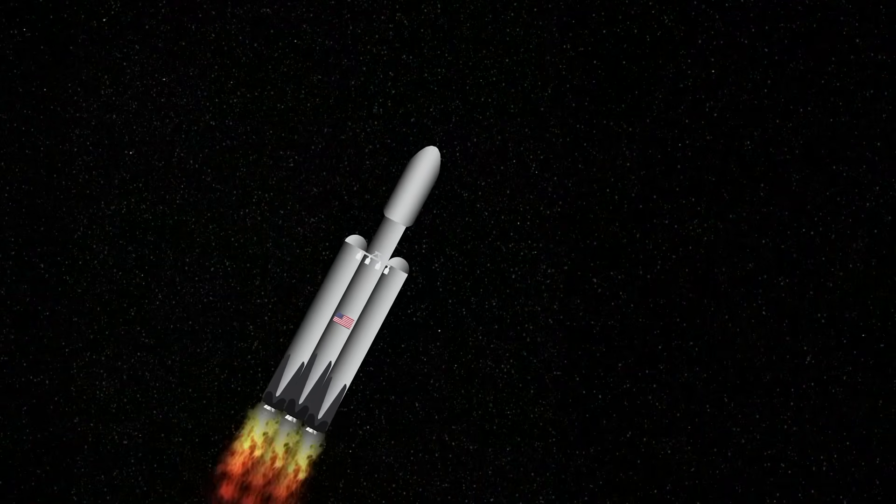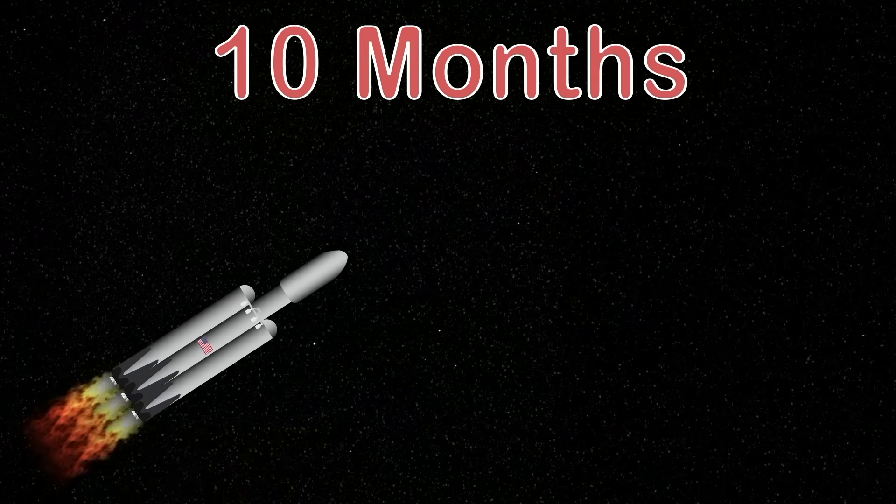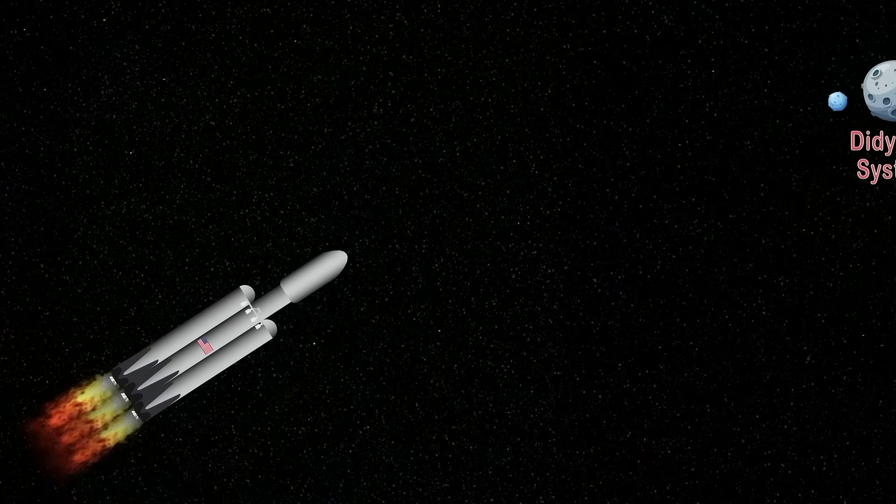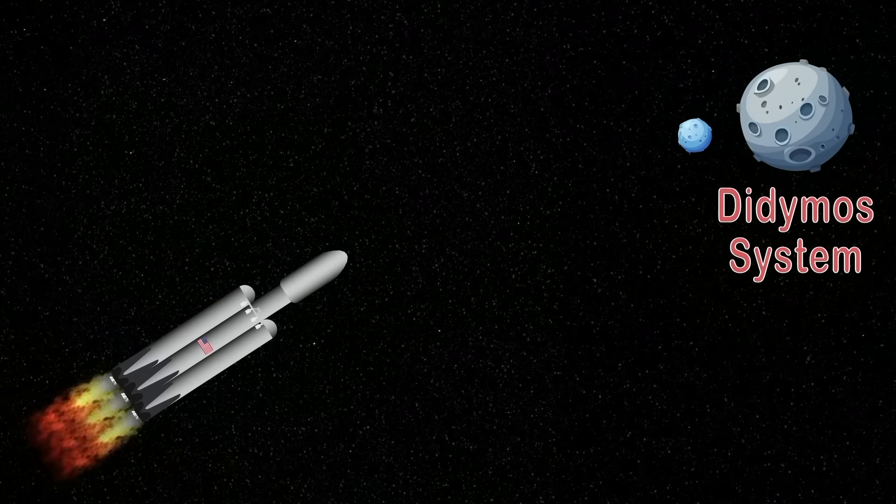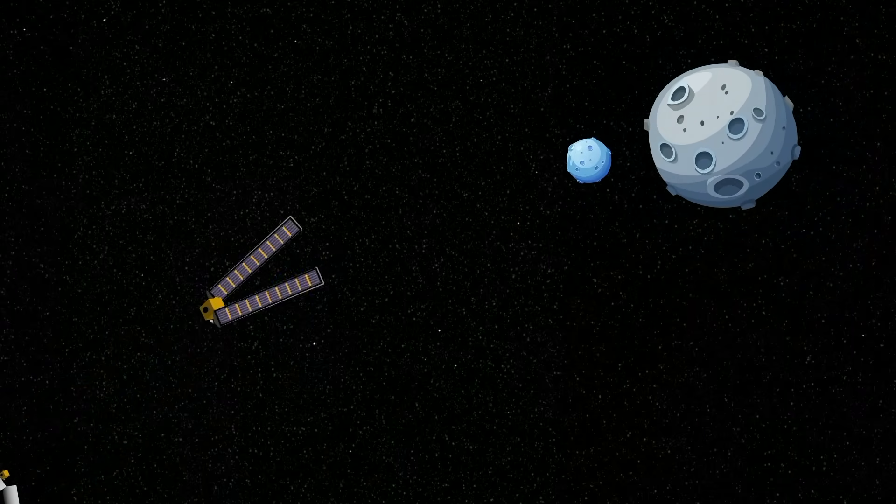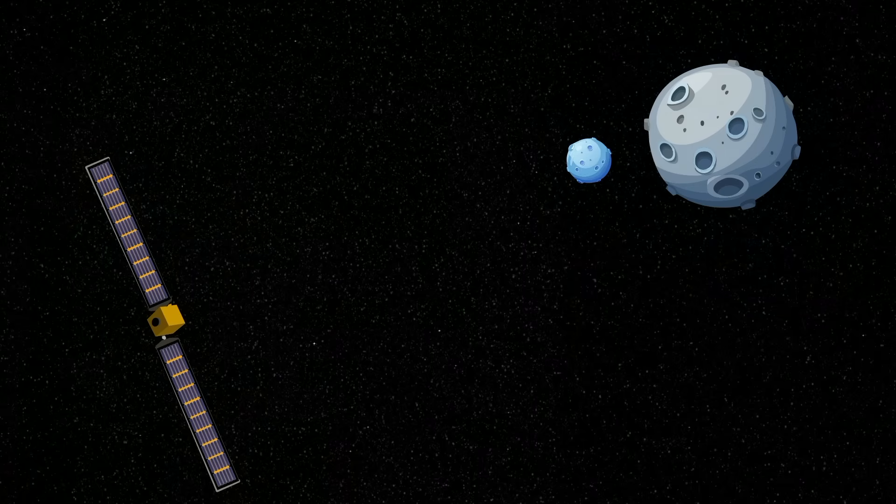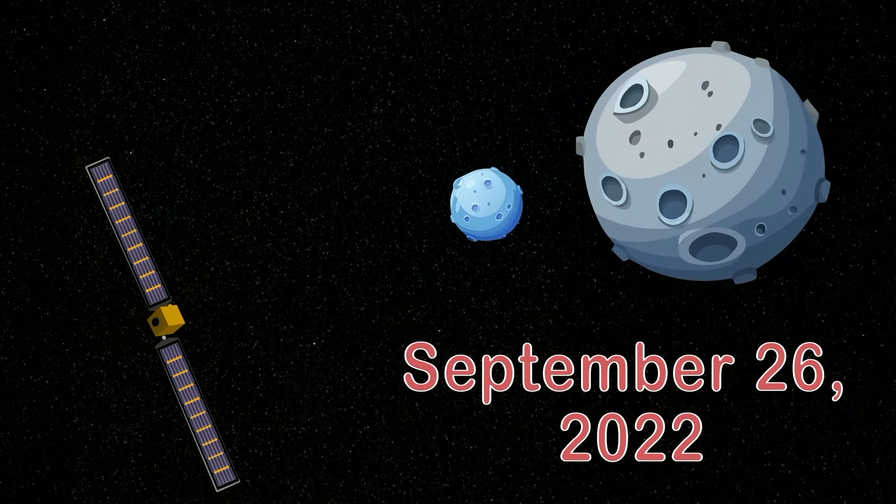The DART satellite traveled for 10 months from your Earth to Didymos system with speed and girth. After the DART satellite was deployed from its craft, it reached me September 26, 2022, that's a fact.